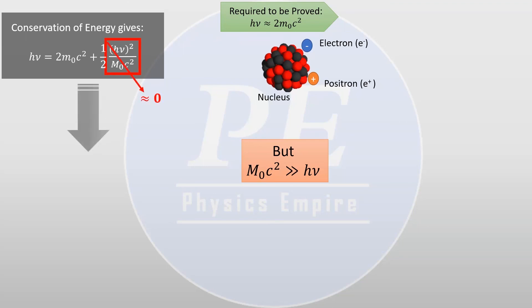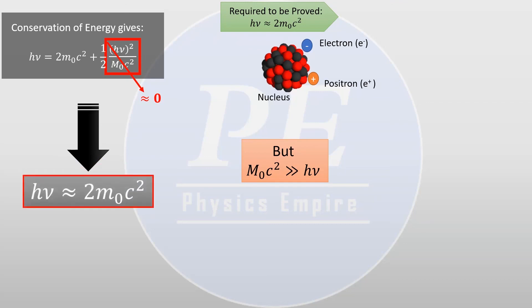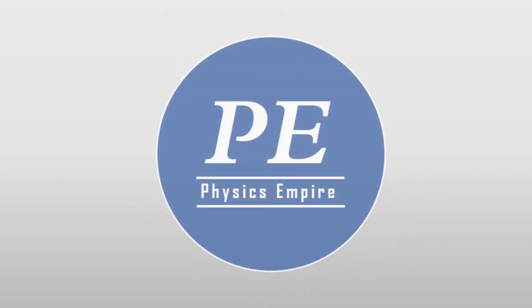So we are left with the following result, which represents the threshold energy of the photon to create an electron-positron pair, which means the photon energy equals twice the rest energy of the electron.